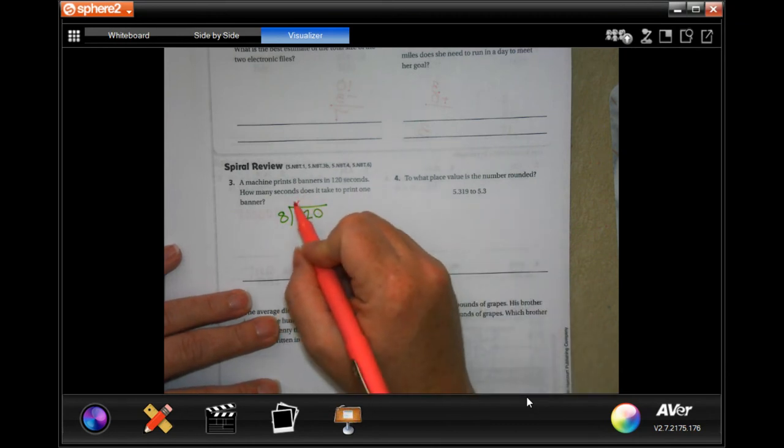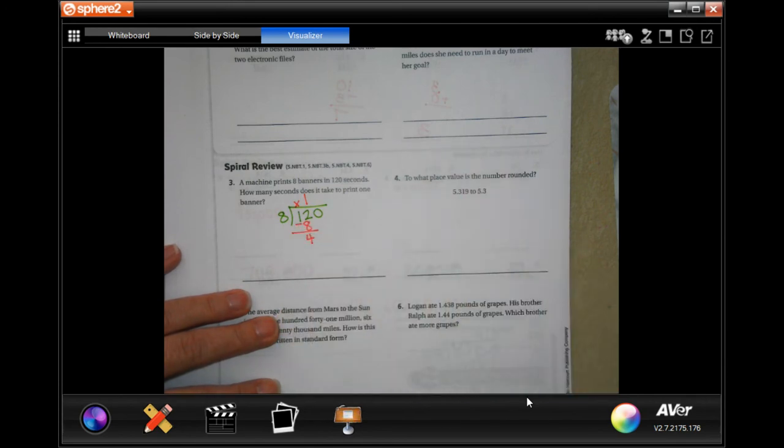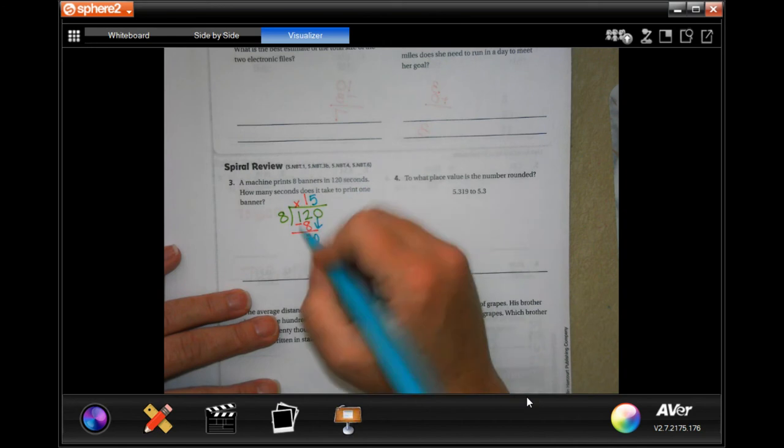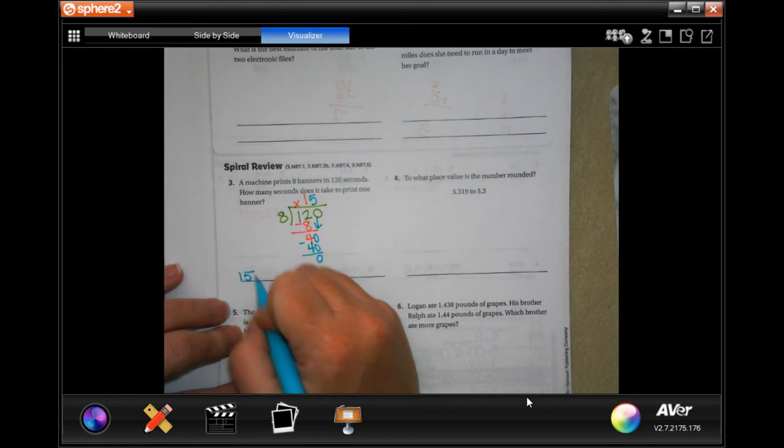8 does not go into 1, placeholder. 8 will go into 12 one time for 8. Subtract, get 4. Now 4 is definitely smaller than 8, so I can bring down my 0. 8 goes into 40 five times. 5 times 8 is 40. Subtract, get 0. So 15 seconds.